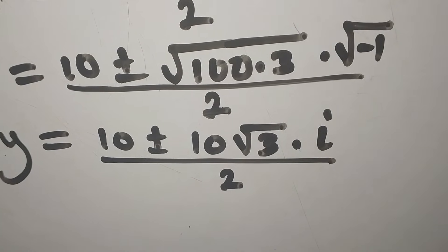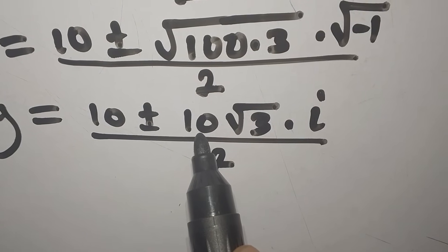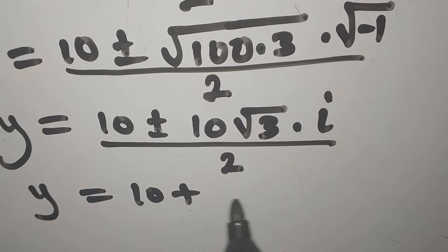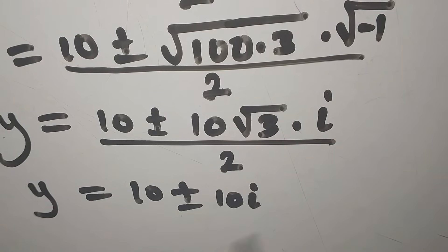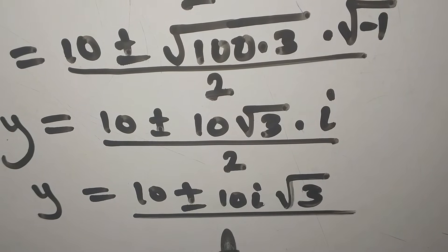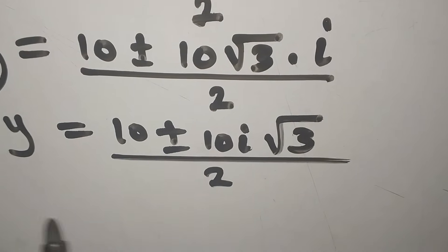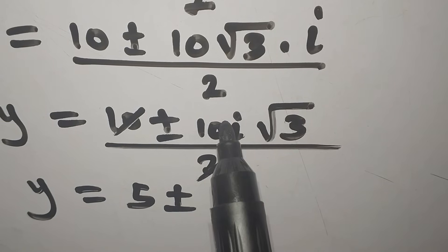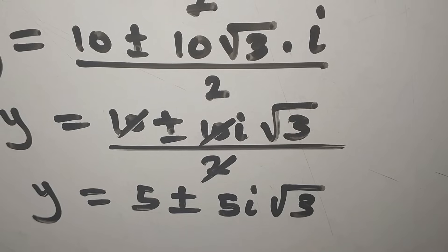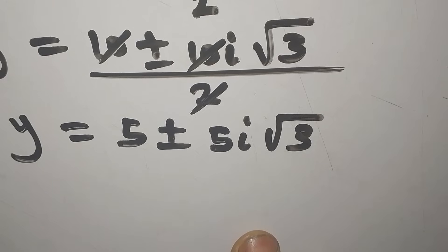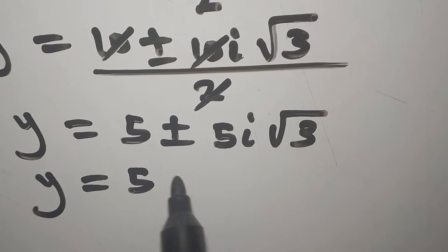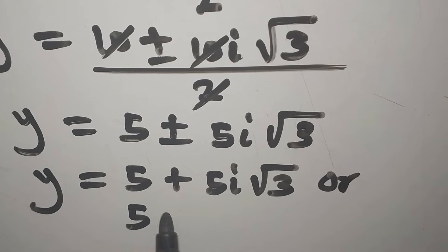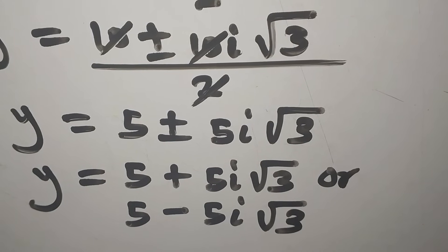The 10i times root 3 term divided by 2, together with the 10 divided by 2, gives us y equals 5 plus or minus 5i root 3. This means y equals 5 plus 5i root 3, or y equals 5 minus 5i root 3. These are our two values of y.